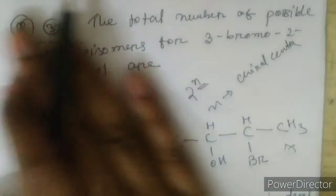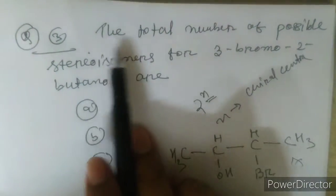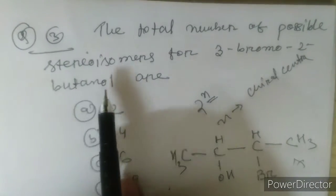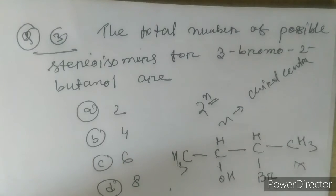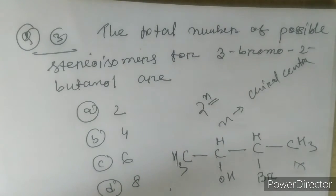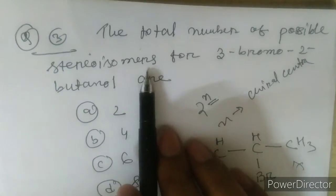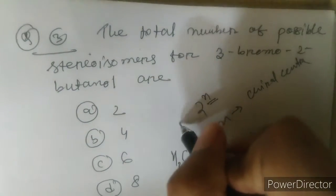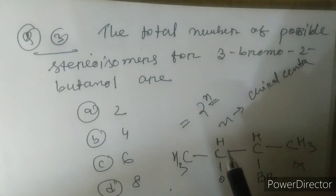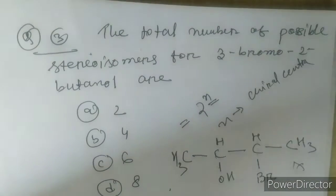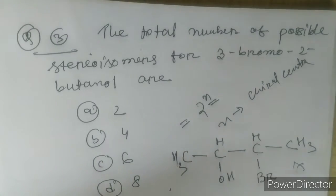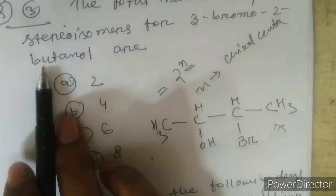Now let's discuss question three, which is a chemistry question — one of my favorite topics. 'What is the total number of possible stereoisomers for 3-bromo-2-butanol?' They have given the IUPAC name. Whenever an IUPAC name is given, you should be able to draw the structure. The formula for total stereoisomers is 2^n, where n is the number of chiral centers (asymmetric carbons).